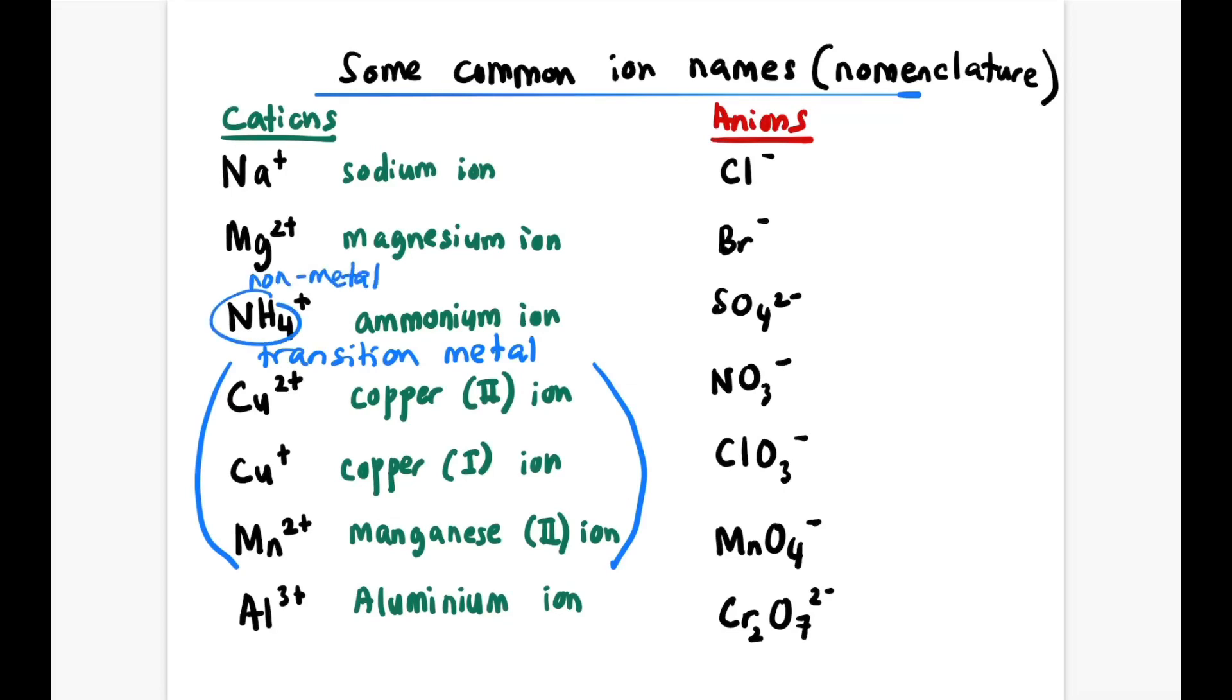Now let's have a look at anions. Cl- is chloride ion, Br- is bromide ion, SO4²- is sulfate ion, NO3- is nitrate ion.